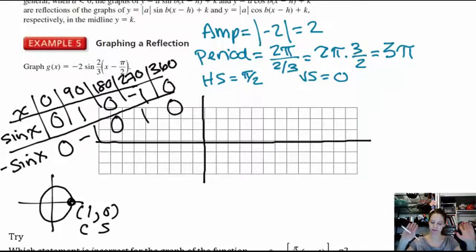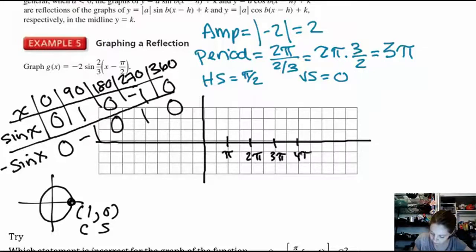Let's start labeling this graph. It has a horizontal shift over π/2, so let me label π, 2π, 3π, 4π. The horizontal shift is π/2. That's where I'm going to start my period. The period is 3π, 1π, 2π, 3π. My period is going to end there. The amplitude means that my maximum is going to be 2 points above the midline, so my maximum is going to be 2 units below the midline, and I'm going to be at negative 2.